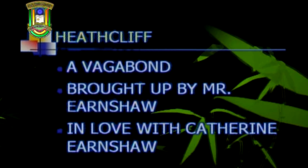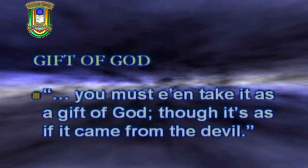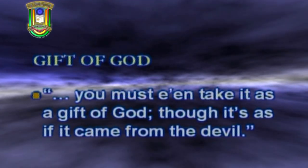That is Wuthering Heights for you. Our discussion today will revolve around the character of Heathcliff. Heathcliff is a vagabond who was found by Mr. Earnshaw in Liverpool and raised along with his children. In the course of the novel, Heathcliff falls in love with Catherine Earnshaw. Though Mr. Earnshaw was optimistic about bringing up Heathcliff along with his own children, telling his wife, 'You must even take it as a gift of God, though it's as if it came from the devil.'